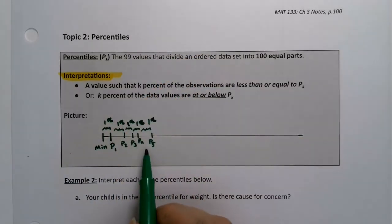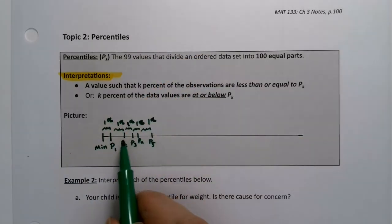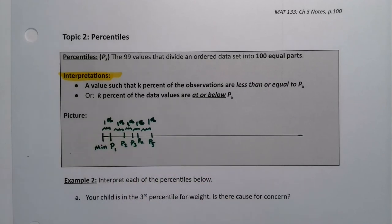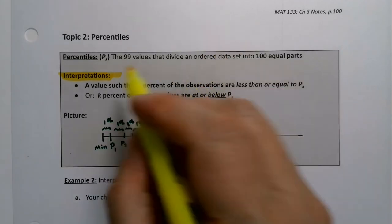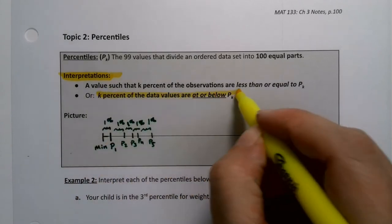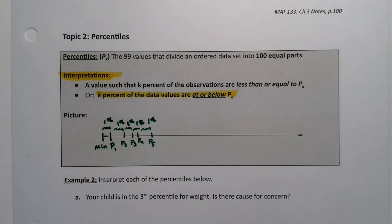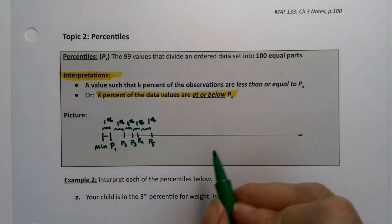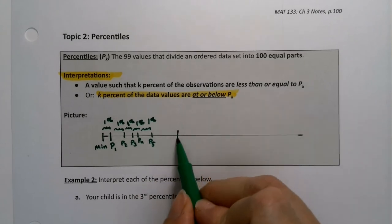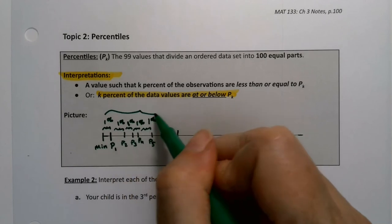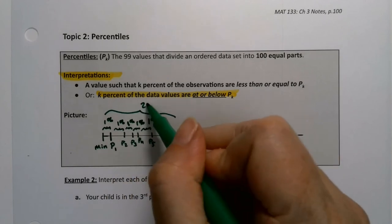So if you look at P5, 5% is below that value — at or below P sub k. I like that particular interpretation. And then it keeps going. Eventually you'll hit 25. So let me just do P sub 25 right here, which would have 25% of the data below it.